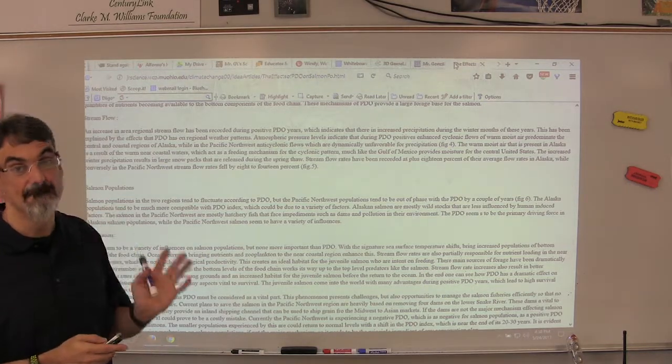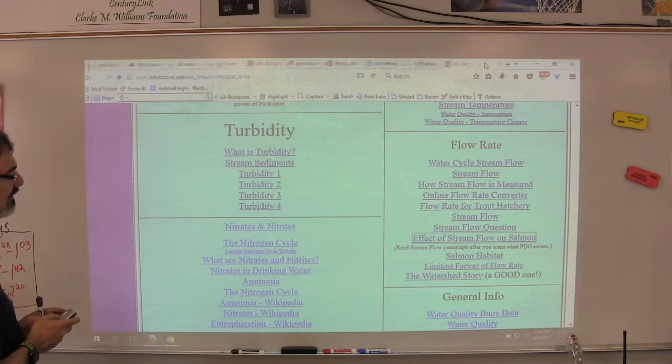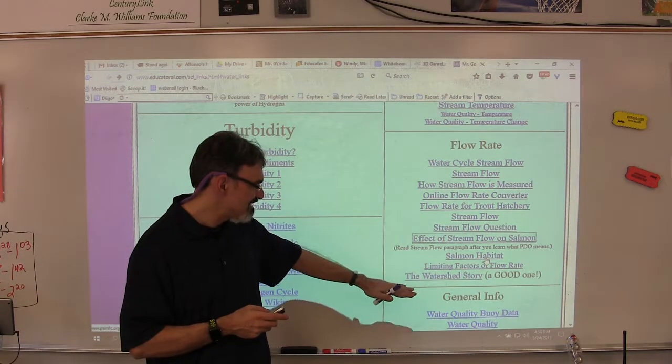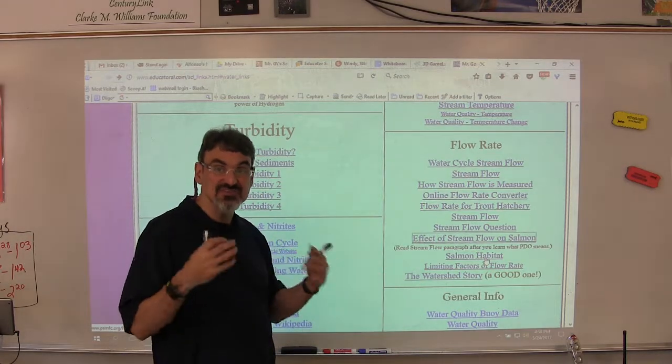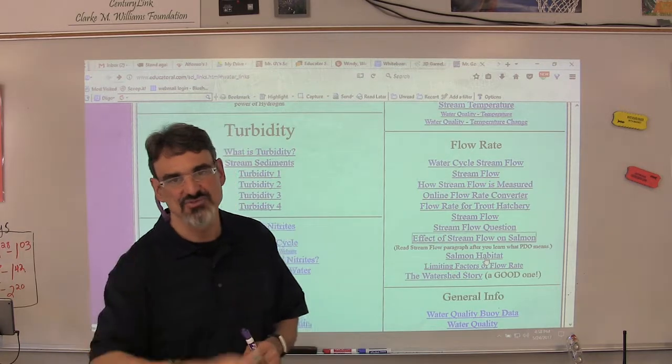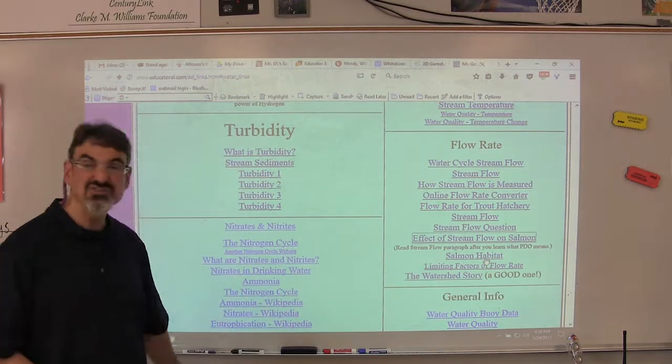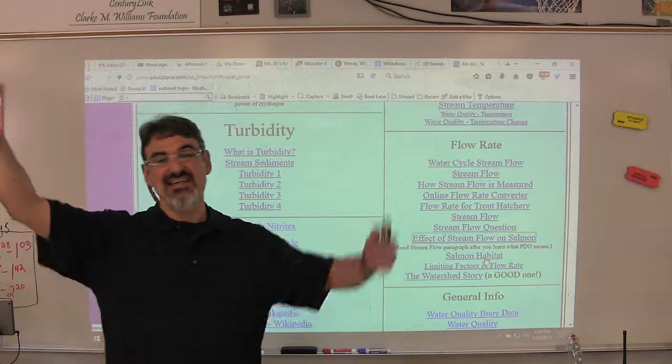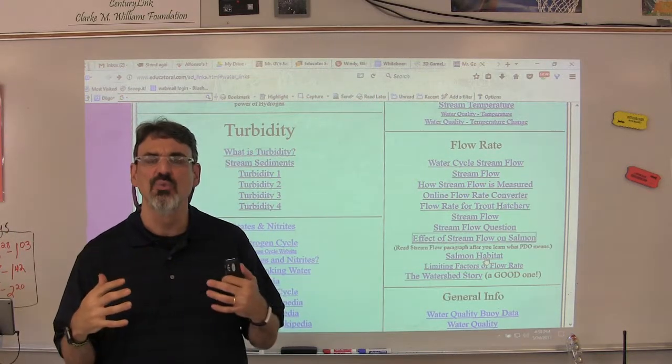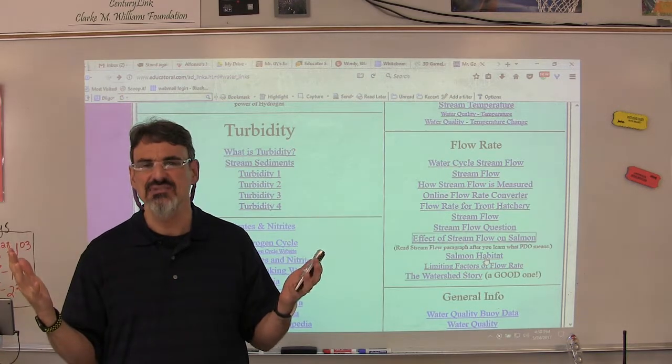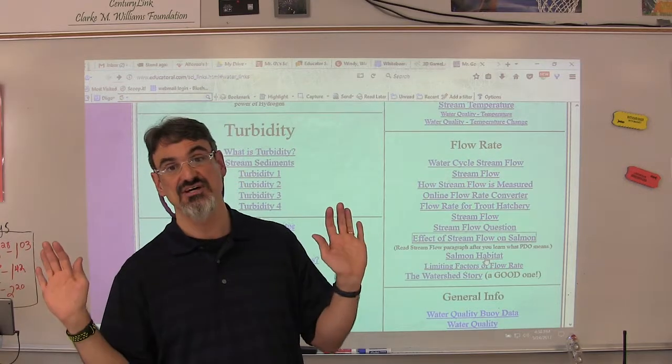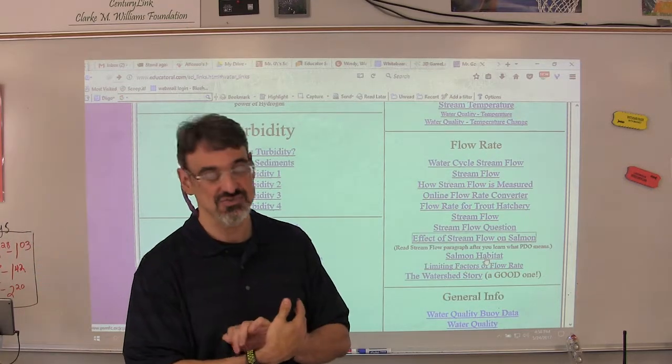You've got a link on salmon habitat and limiting factors that affect flow rate. Of course, you'll enjoy the watershed story—it's really good. This should make you a complete expert on flow rate and be able to share your graphs and data and talk about what that flow rate means about Chimicum Creek and how our creek is doing, especially with data going back to 2002. You've got a great history right there.